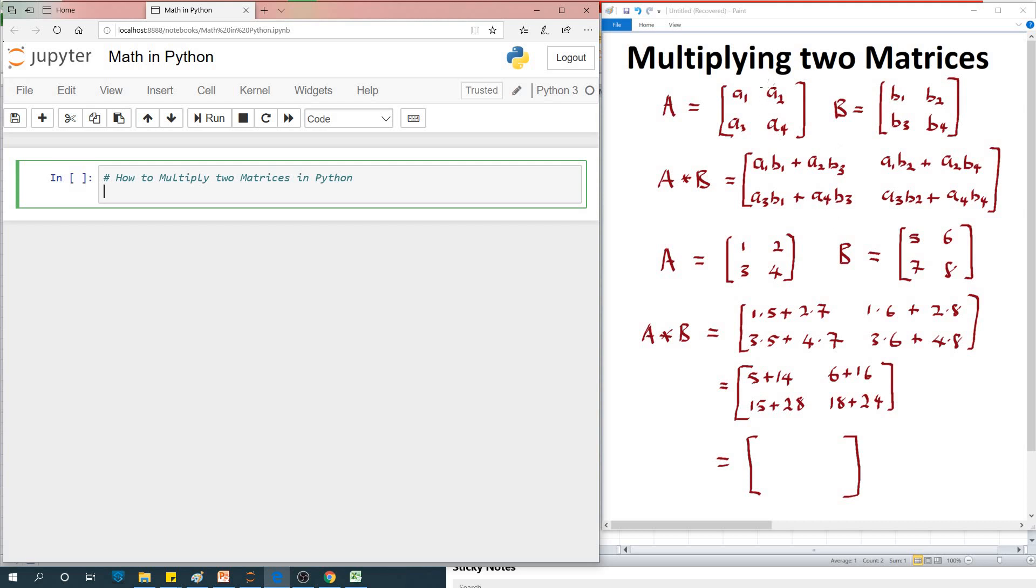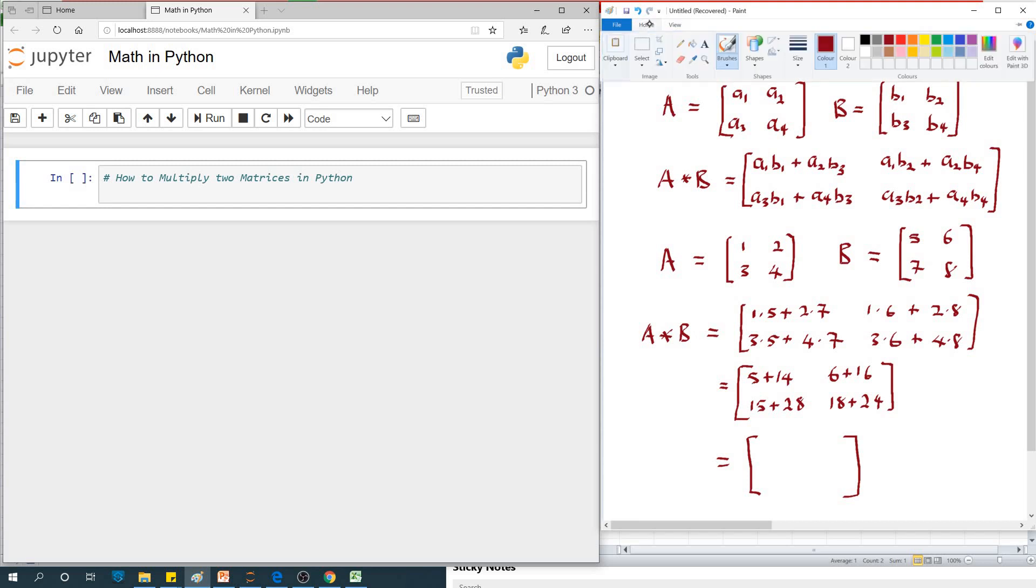This is actually how it goes. The key to multiplying two matrices is that you are multiplying across the first row and down the column of the second matrix.